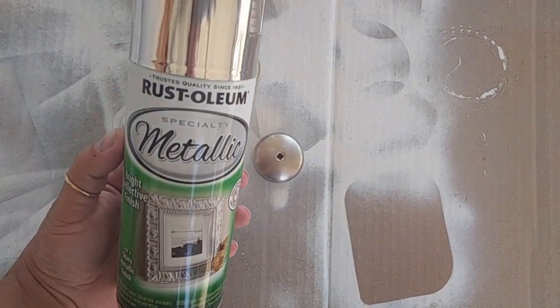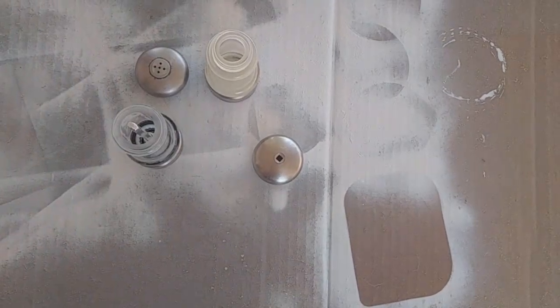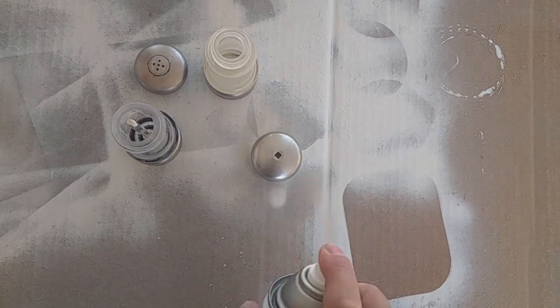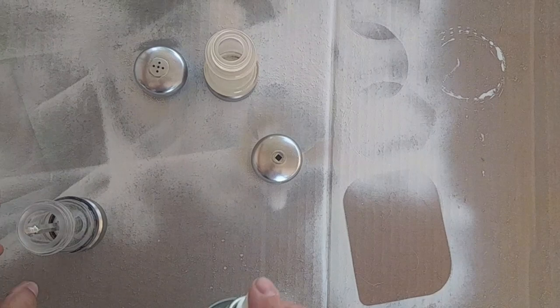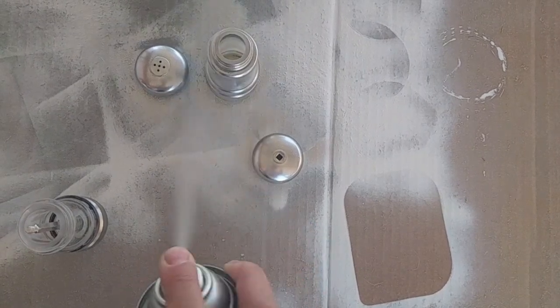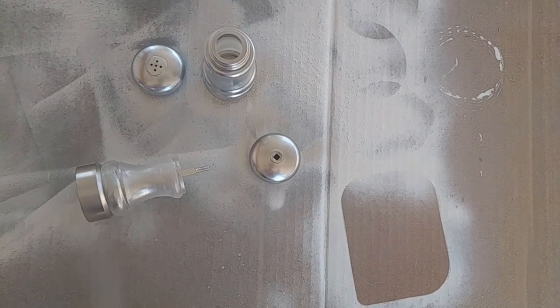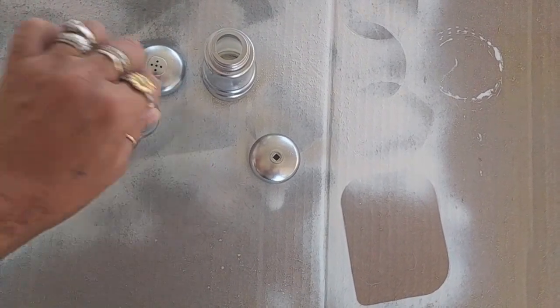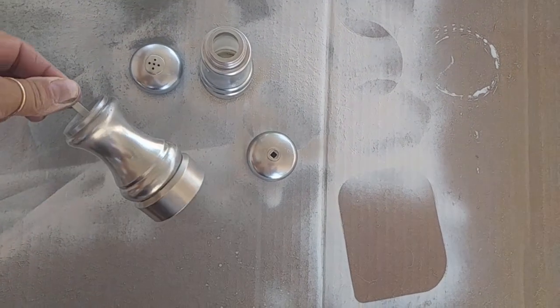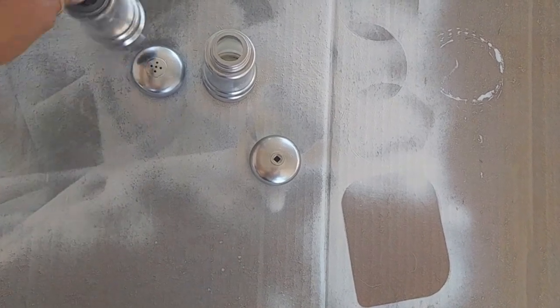So I'm using this Rust-Oleum Specialty Metallic in silver, which I'll leave links below. It goes on great. I mean, it looks, look how shiny and reflective that looks, right? And I was hoping for that. That's not what I got.